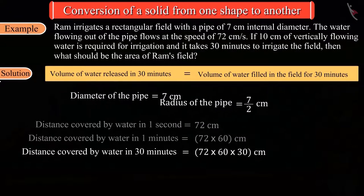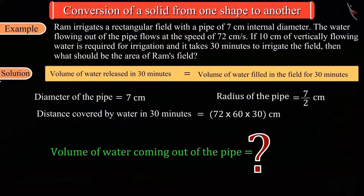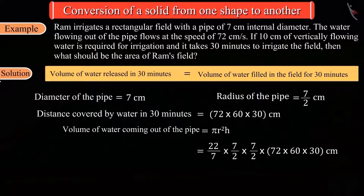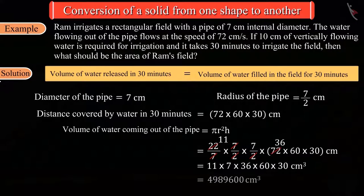Now if we assume that the water is static for some time, can you guess the volume of this water? Well done, we can do this with the help of this formula, where r is the radius of the pipe and h represents the distance traveled by water in 30 minutes, which gives us the volume of water coming out of the pipe in 30 minutes.